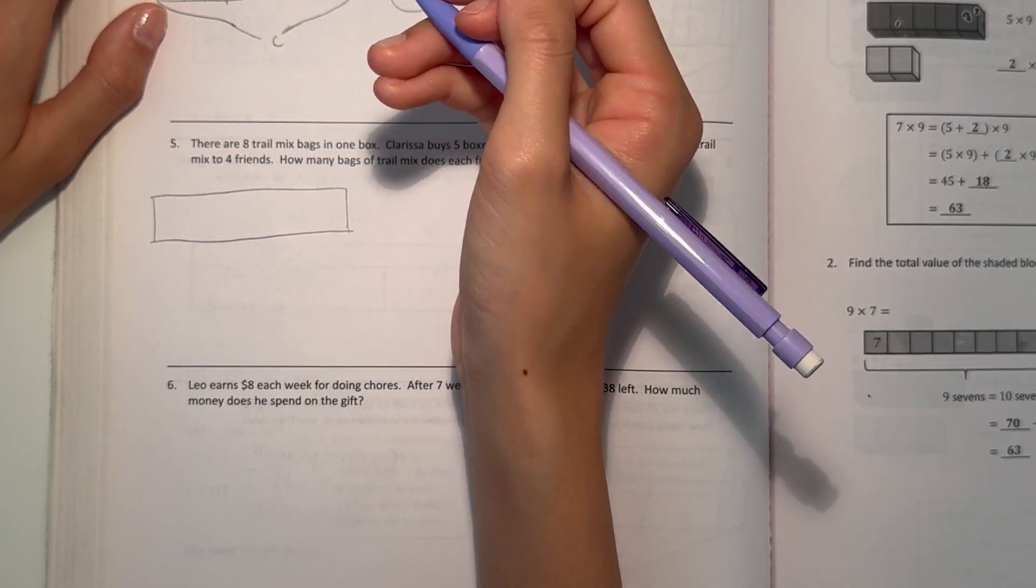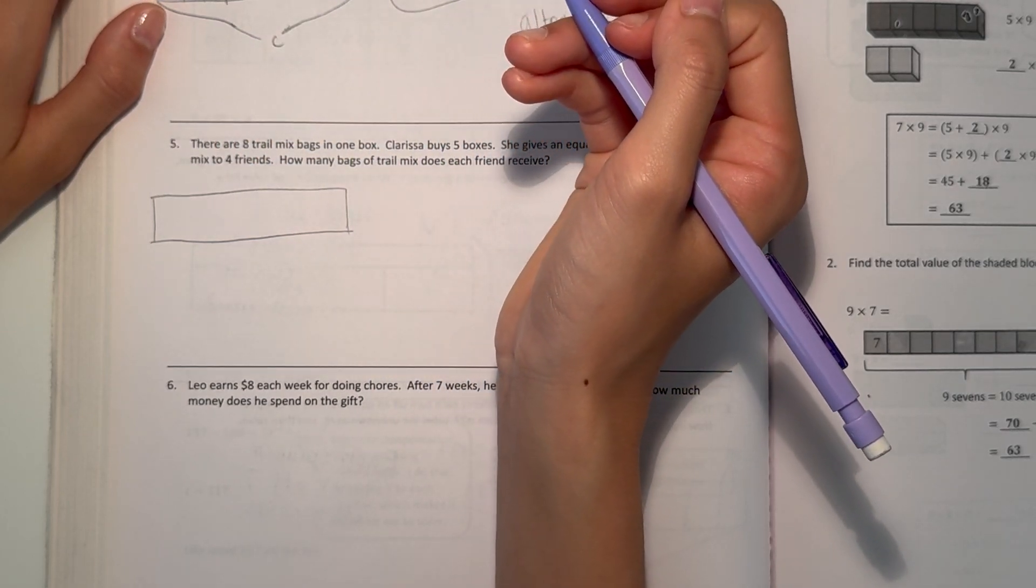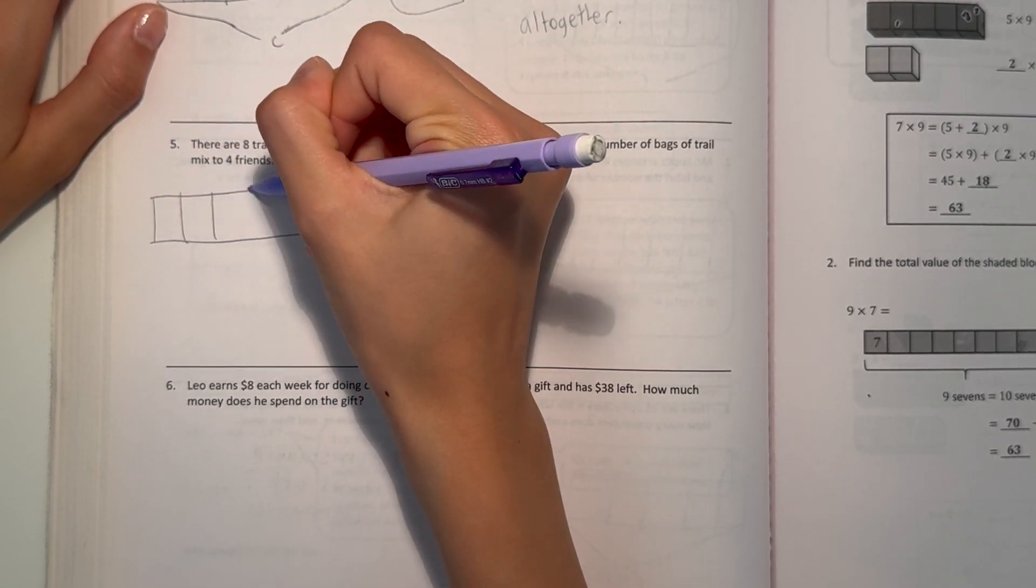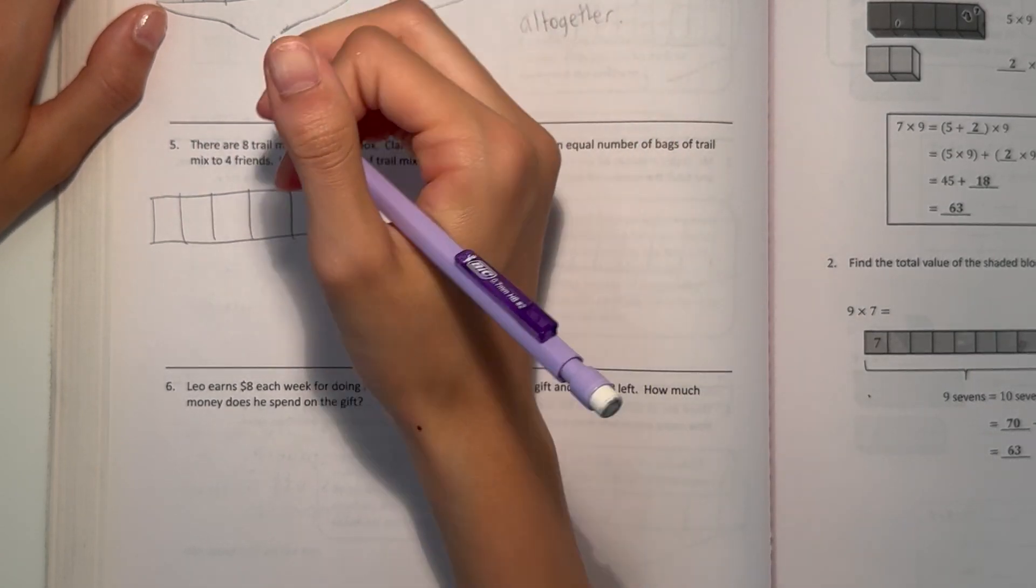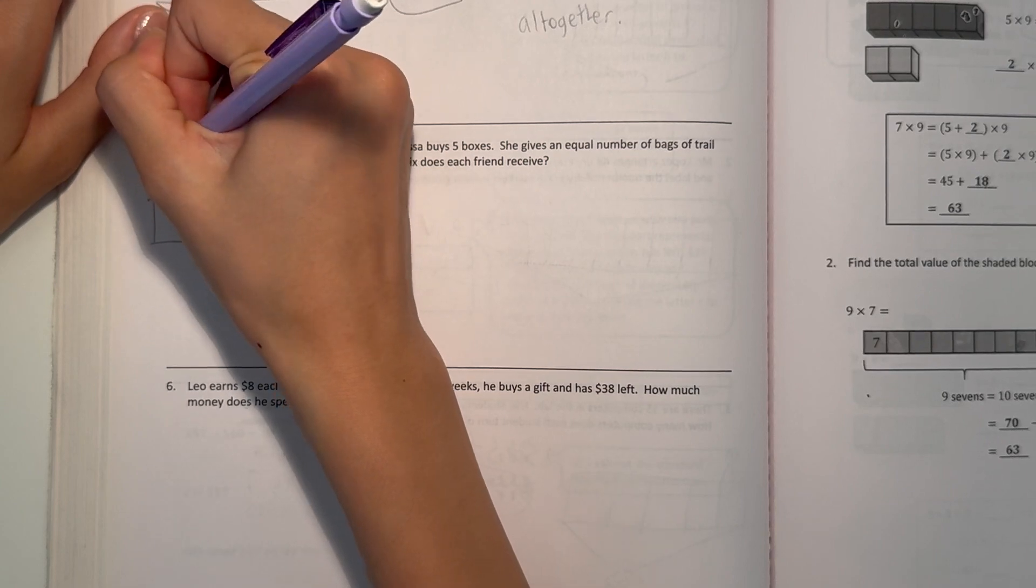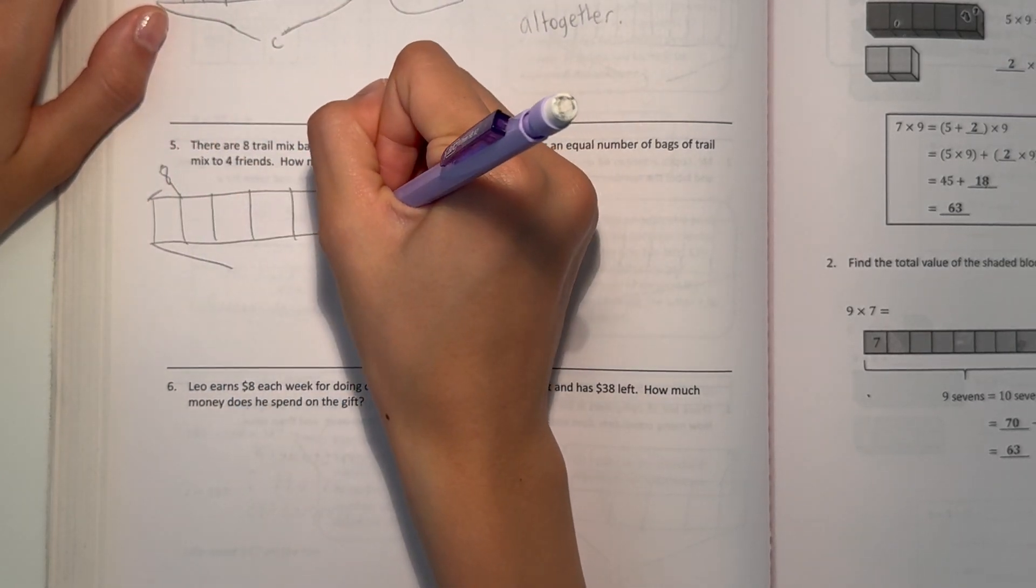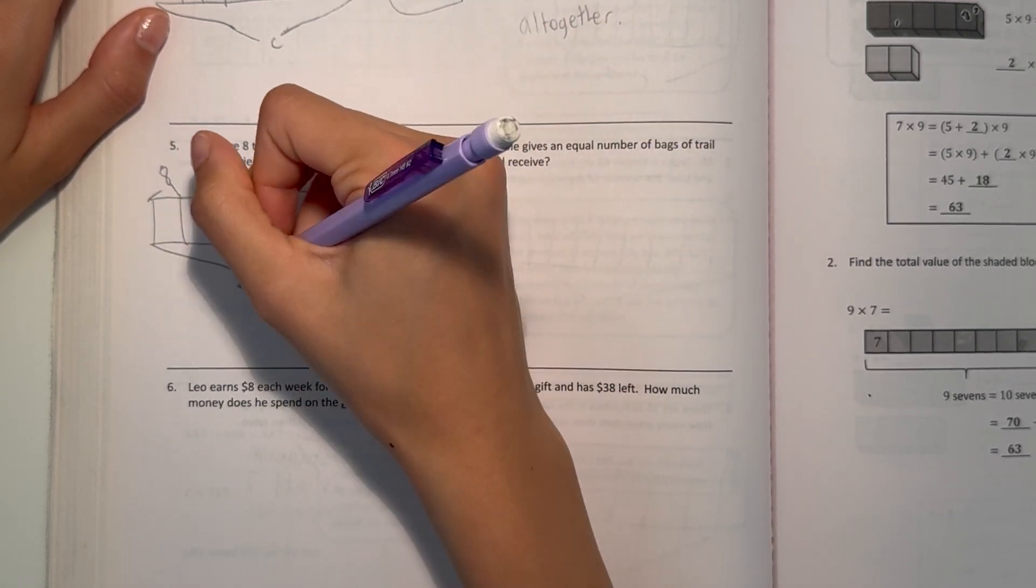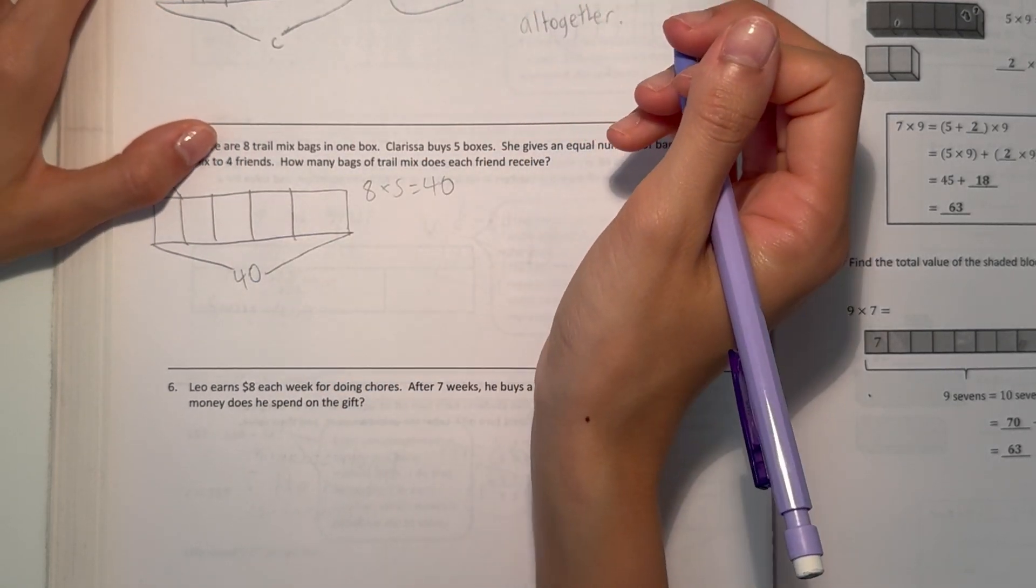So in one box, we have 8. And since you bought 5, 1, 2, 3, 4, 5, and there's 8 in each box. So how many are in total? Well, 8 times 5 is 40. So then that means there's 40 bags in total.